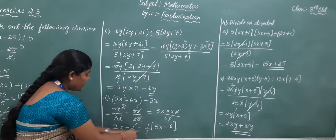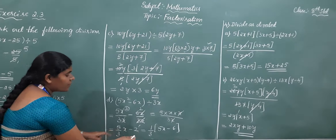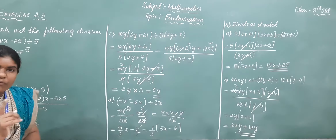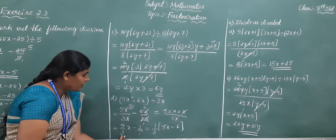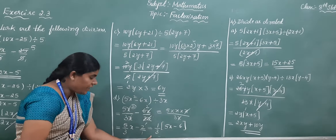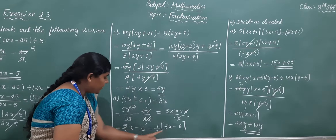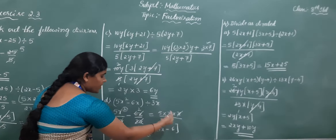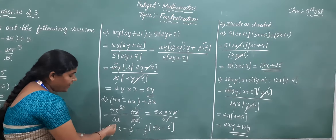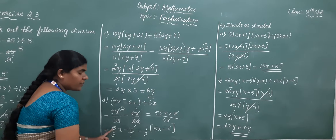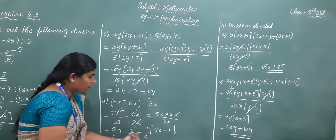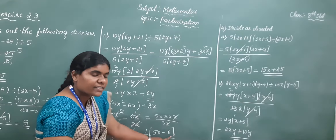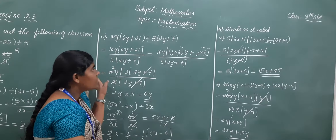In the next step, both terms have different denominators. Take LCM — take 1 by 3 outside. Cross multiplying: 5x minus 3 twos are 6. Therefore the final answer is 1 by 3 into (5x minus 6).